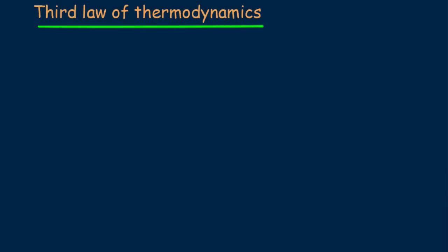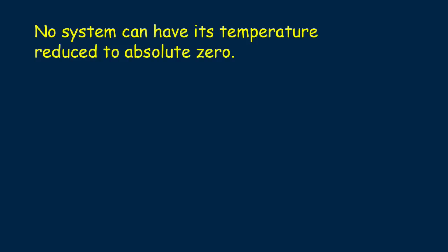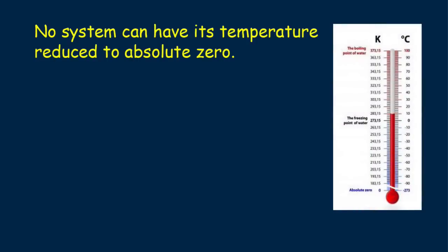The third law of thermodynamics states what we've learned about the lowest limit of temperature. No system can have its temperature reduced to absolute zero. As investigators attempt to reach this lowest temperature, it becomes more difficult to get closer to it. Researchers continue to get closer and closer to the elusive absolute zero, never reaching it.